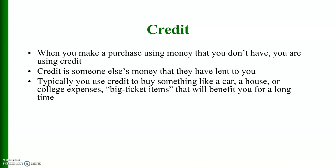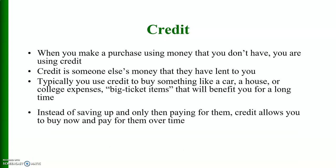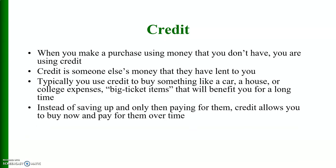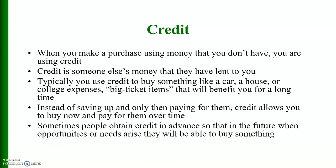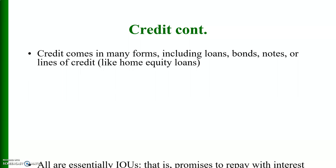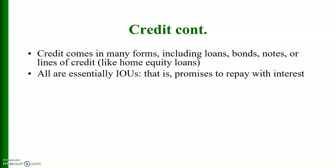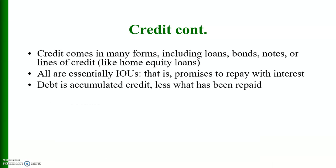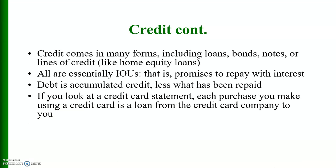Typically you use credit to buy something like a car, a house, or college expenses — big-ticket items that will benefit you for a long time. Instead of saving up and only then paying for them, credit allows you to buy now and pay over time. Sometimes people obtain credit in advance so that when future opportunities arise they will be able to buy something. Credit comes in many forms including loans, bonds, notes, or lines of credit — all are essentially IOUs, a promise to repay with interest.